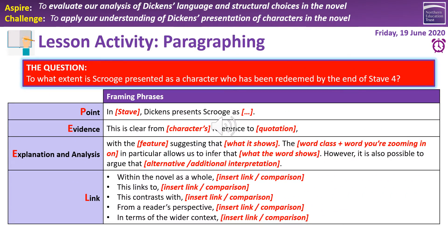Our next task is to write a series of paragraphs about the question — the extent to which Scrooge is presented as a redeemed character. Aim for a minimum of one paragraph; three is ideal. Each paragraph should take about eight to ten minutes at this stage. In a forty-five minute lesson, three paragraphs should take about half an hour. Two is still pretty good; one is a little minimal.